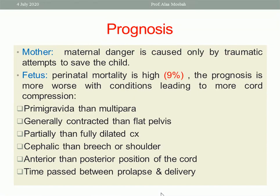Further factors worsening prognosis include: partially versus fully dilated cervix, cephalic presentation versus breech or shoulder, anterior versus posterior position of the cord, and the time elapsed between prolapse and delivery — the longer the time, the worse the prognosis.